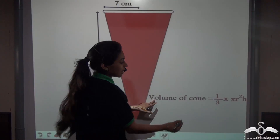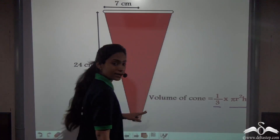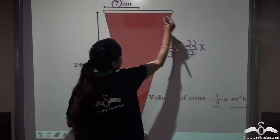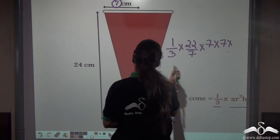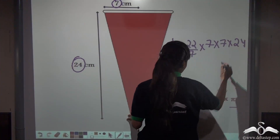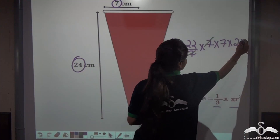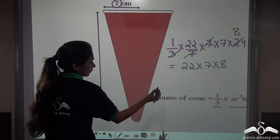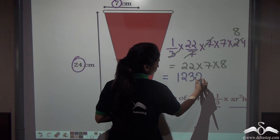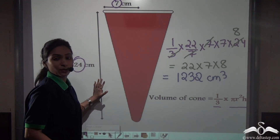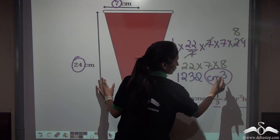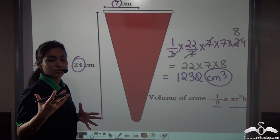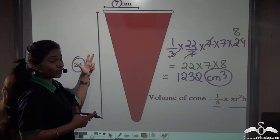We know that the volume of a cone is (1/3)πr²h, where r is the radius and h is the height. By solving this we get: (1/3) × (22/7) × 7² × 24, which gives us 22 × 7 × 8, and by solving this we get 1,232 centimeters cubed. Remember that whenever we calculate the volume of a cone, we use cubic units, because volume is always represented in cubic units. So the volume of a cone is (1/3)πr²h, where r is the radius of the circular base and h is the height of the cone.